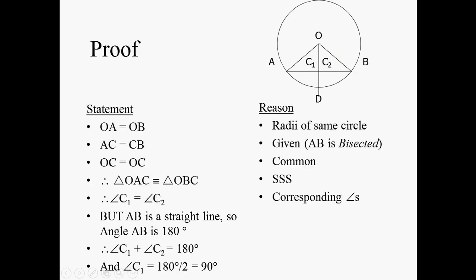Once we have that we are up and running. So we write proof and we have a statement and a reason for the statement. In our statement we say OA is equal to OB because they are radii of the same circle. Side AC is equal to side BC because of the word bisected which means this line was cut exactly in half. And line OC is equal to line OC because it's the same line.